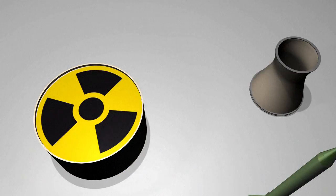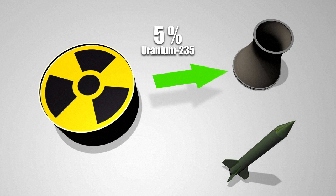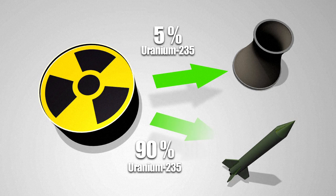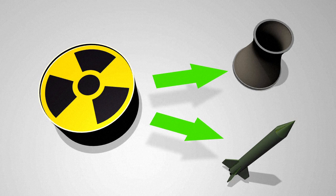To generate power, Uranium is enriched only to 5%. To make a nuclear bomb, it must be enriched to at least 90%. Plutonium-239 is a second option.